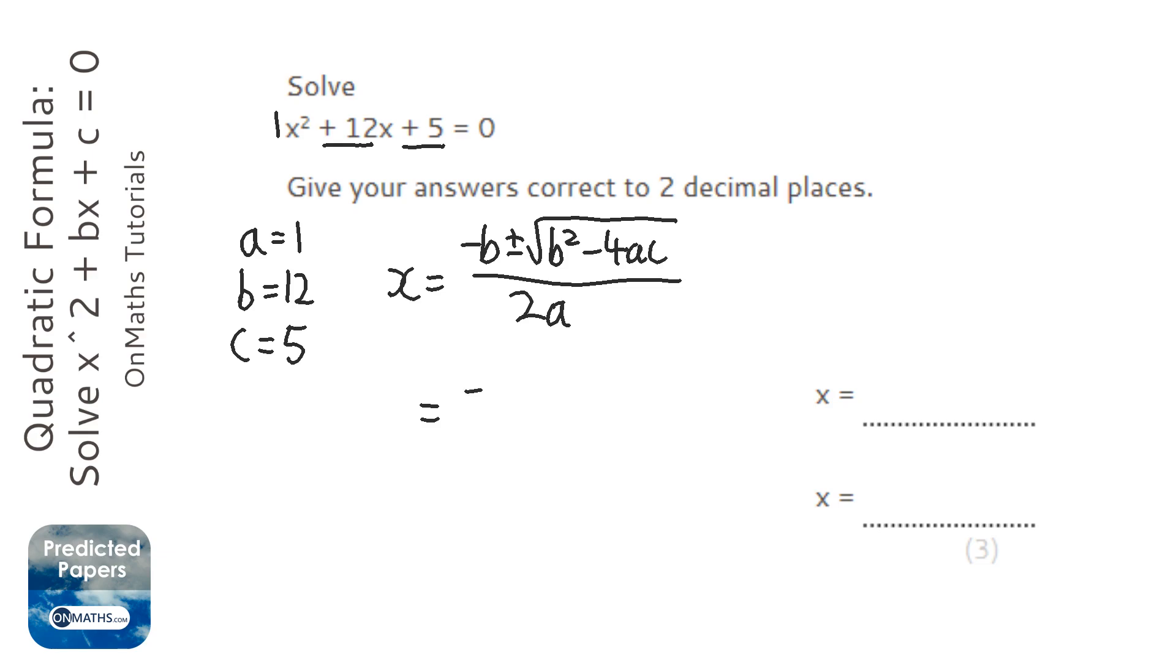So, minus b, well that's minus 12, and I'm just going to do a plus for now, square root of b squared, which is 12 squared, minus 4